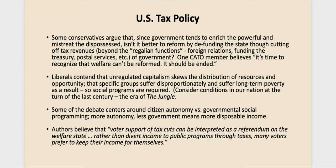On the other hand, liberals point to unregulated capitalism and how it skews the distribution of resources and opportunity. Specific groups suffer disproportionately and experience long-term poverty as a result. Social programs and government intervention at the worksite are required. The conditions at the turn of the last century — as depicted in The Jungle — ultimately led to the progressive era where some social reforms were implemented. What was also going on around the world at that time was that socialism was gaining a strong foothold in Europe and Russia, where socialists overthrew the czar in 1917.